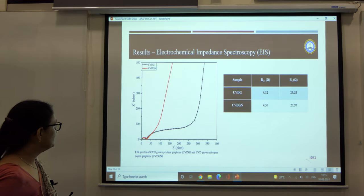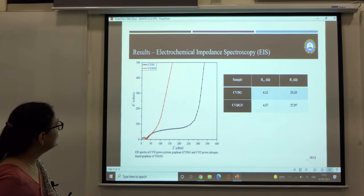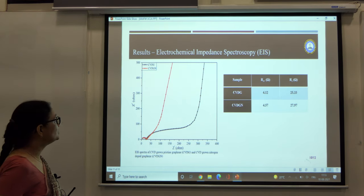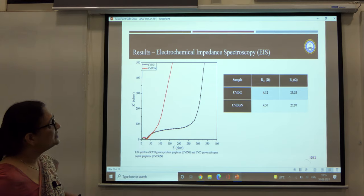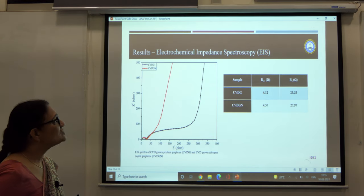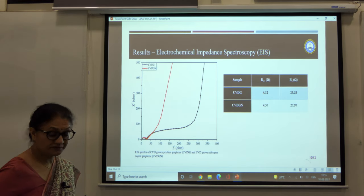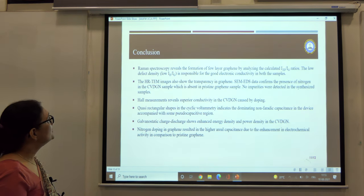In the EIS spectra, the red one is for the nitrogen doped graphene. This plot is quite steep as compared to the pristine one. When we calculated the series resistance, we saw a drop in the resistance in case of the nitrogen doped graphene.